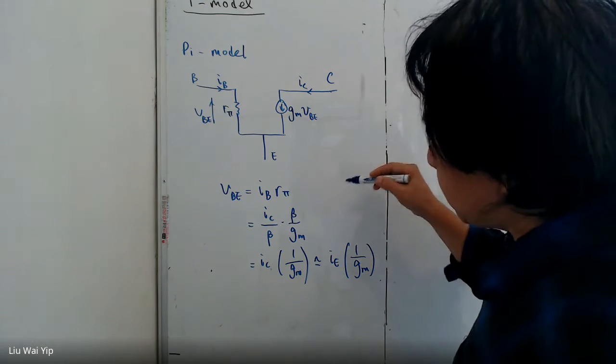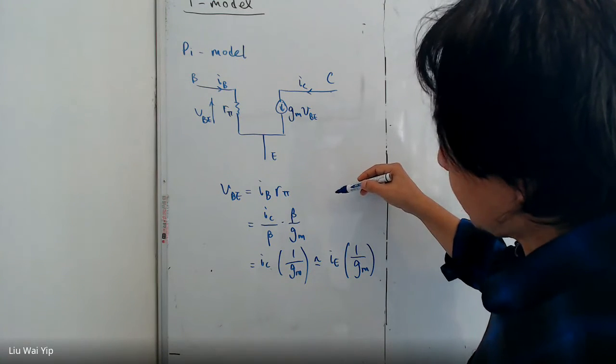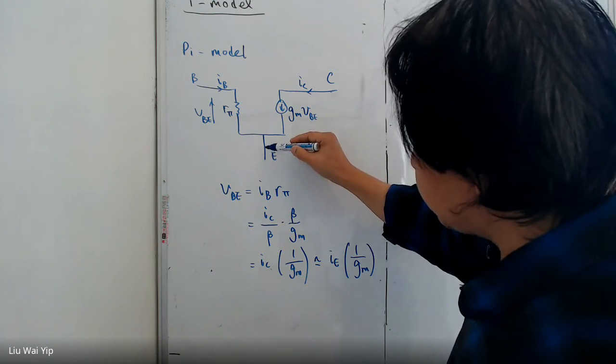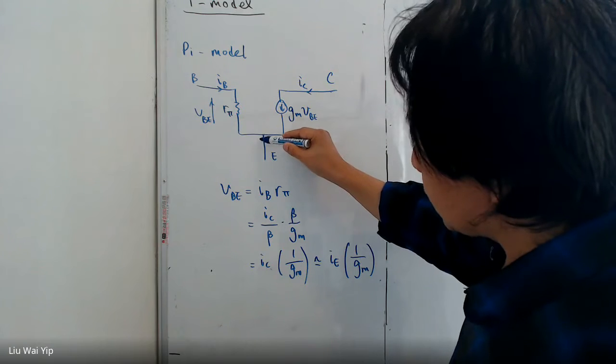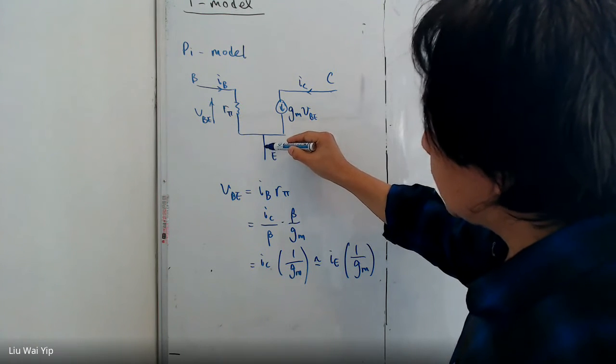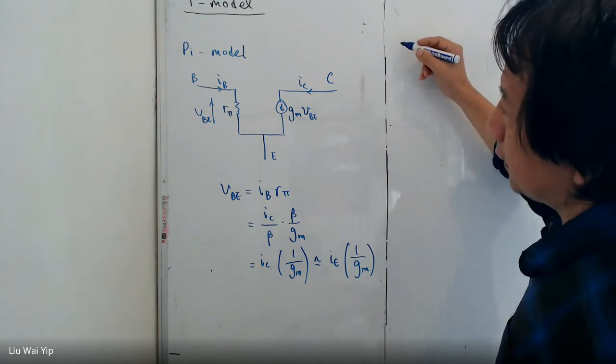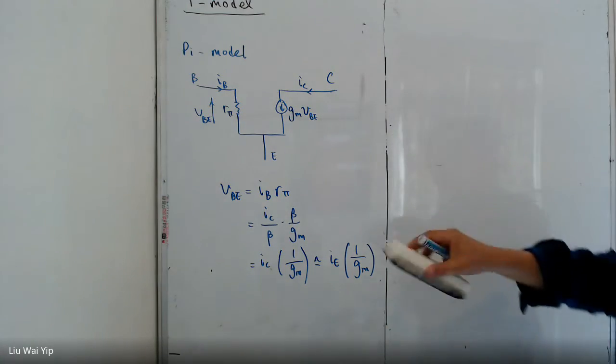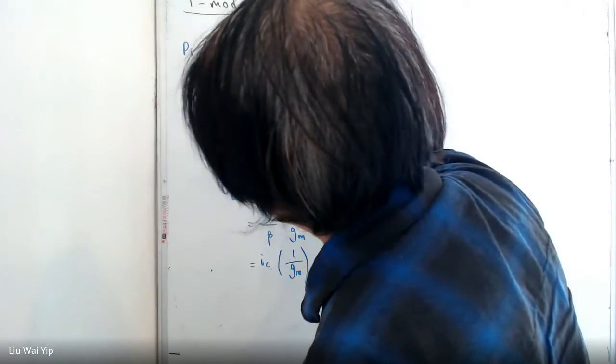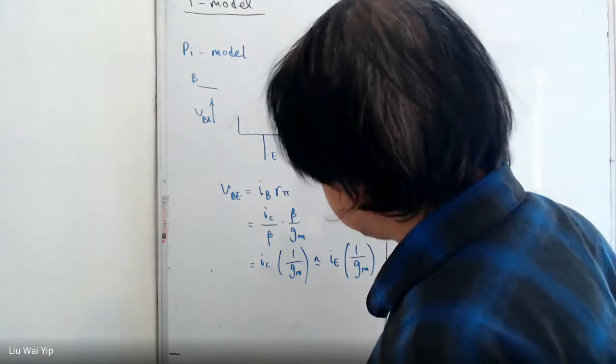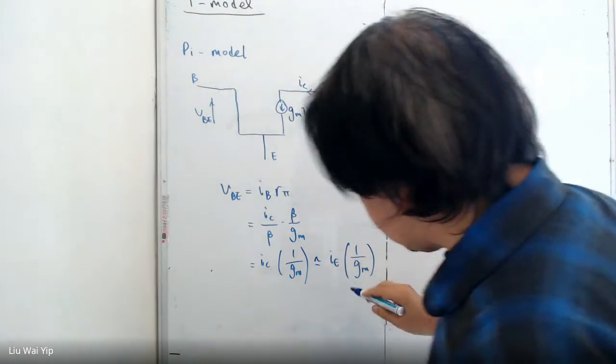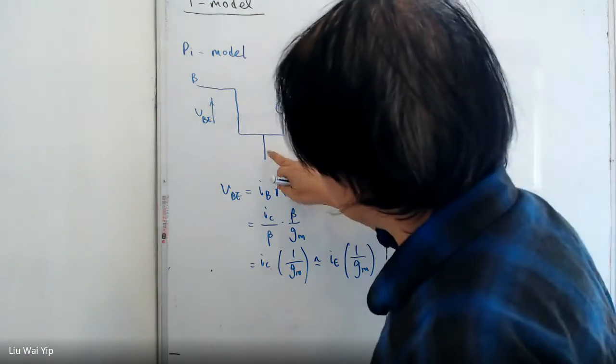So in this case, we can say that instead of drawing a circuit here like this, we can remove it. And according to here, we connect another resistance.